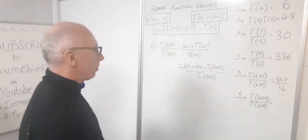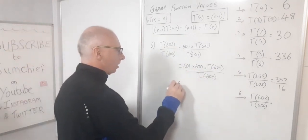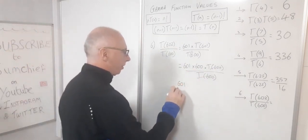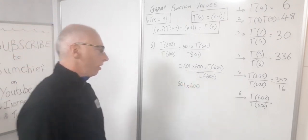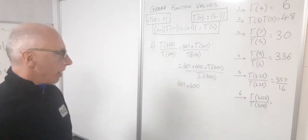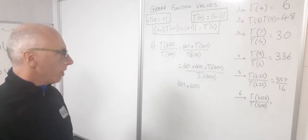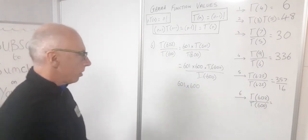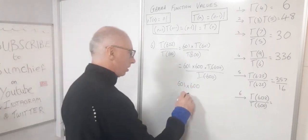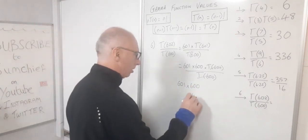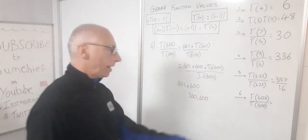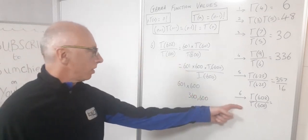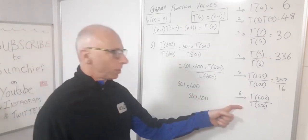So 601 times 600 gives us 360,600. That's the answer to question 6.